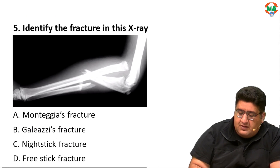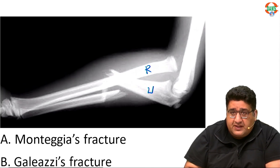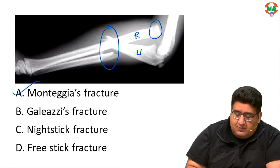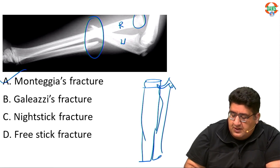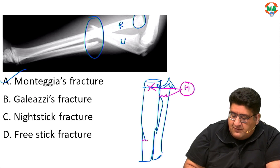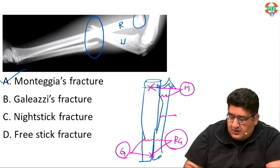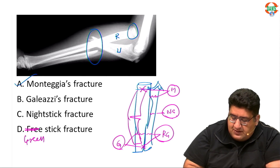Question five: identify the following fracture. This is the radius and this is the ulna. The ulna is fractured at the proximal one-third of the shaft, and the radial head is dislocated — this is a clear-cut Monteggia fracture. Fracture of the proximal one-third of the ulna shaft with radial head dislocation is Monteggia. Fracture of the shaft of radius at the junction of middle and distal one-third with DRUJ dislocation is Galeazzi. Isolated fracture of the shaft of the ulna is called nightstick. An incomplete unicortical fracture of the radius is a greenstick fracture. The answer is Monteggia.